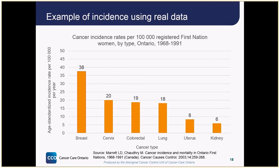This is an example of incidence rates using real data from an older study of registered First Nation women in Ontario. A more recent study has been done, and new results will soon give us an updated picture of how common cancer is among First Nations in Ontario. But this graph from the older study will give you an idea of more realistic rates compared to our pretend example. As we can see on the graph, cancer is much rarer than our made-up example of 10 people, but incidence rates can be quite different for each cancer type.